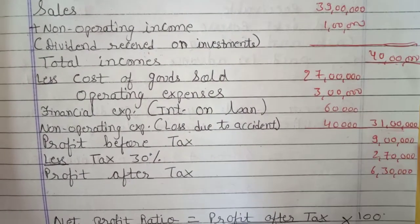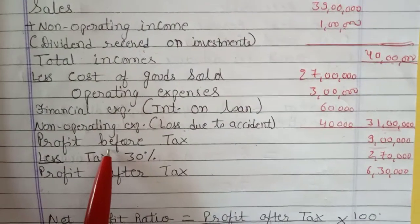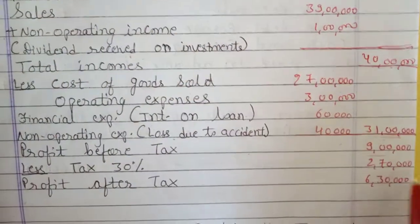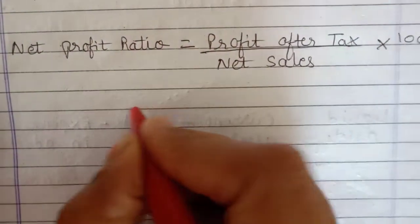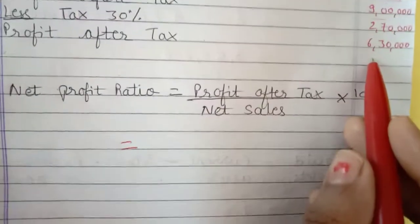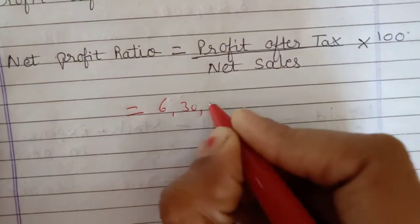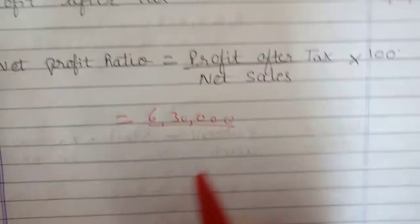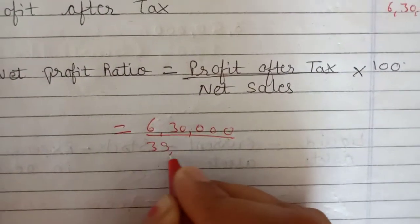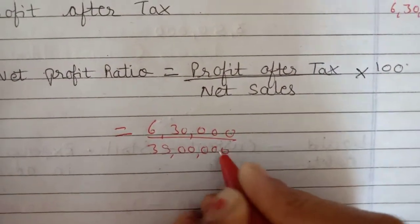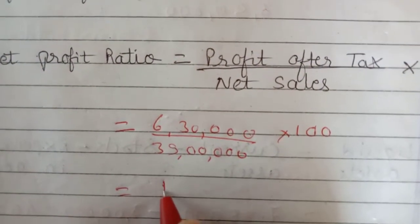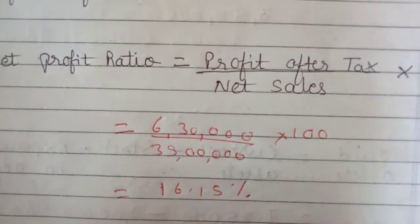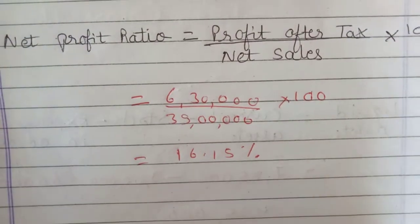From total income of Rs. 40,00,000 we deduct total expenses of Rs. 31,00,000, giving profit before tax of Rs. 9,00,000. Deducting 30% tax, that is Rs. 2,70,000, gives profit after tax of Rs. 6,30,000. Net profit ratio equals Rs. 6,30,000 upon net sales of Rs. 39,00,000 into 100, which equals 16.15%.